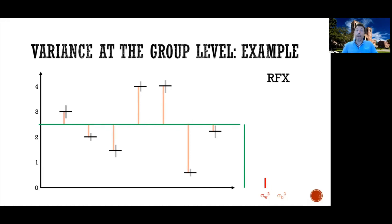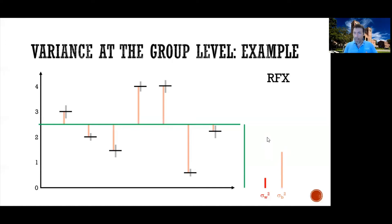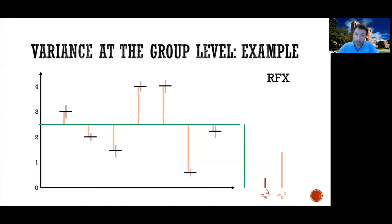This is known as sigma squared between — between-subject variability. On average the result was 2.5, but for some it was really high and for some really low. That variability around the mean is the between-subjects variability, which came out to about 1.48. If we were to do our inference with a random effect, the denominator would be proportional to sigma squared between. The effect is still probably about two times as big as the between-subject variability, so it would likely still be significant, but not quite as strong as with the within-subject variance.